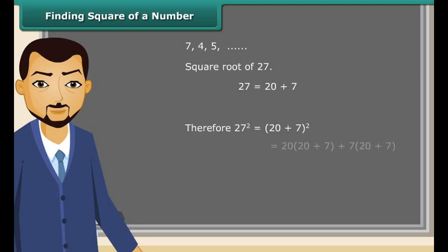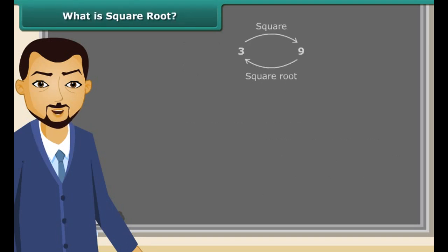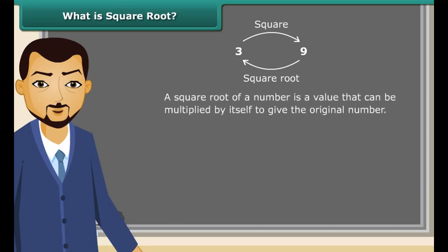We know 27 is a sum of 20 and 7. Therefore, square of 27 is equal to 20 plus 7 whole square is equal to 20 into 20 plus 7 plus 7 into 20 plus 7 which is equal to 400 plus 140 plus 140 plus 49 which is equal to 729.